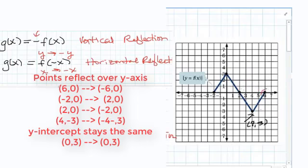Take a look at that. And what that looks like is, see this point (6,0) here? That's going to go way over here to (-6,0). The point (2,0) is going to go to (-2,0). And the point (-2,0) is going to go to (2,0).